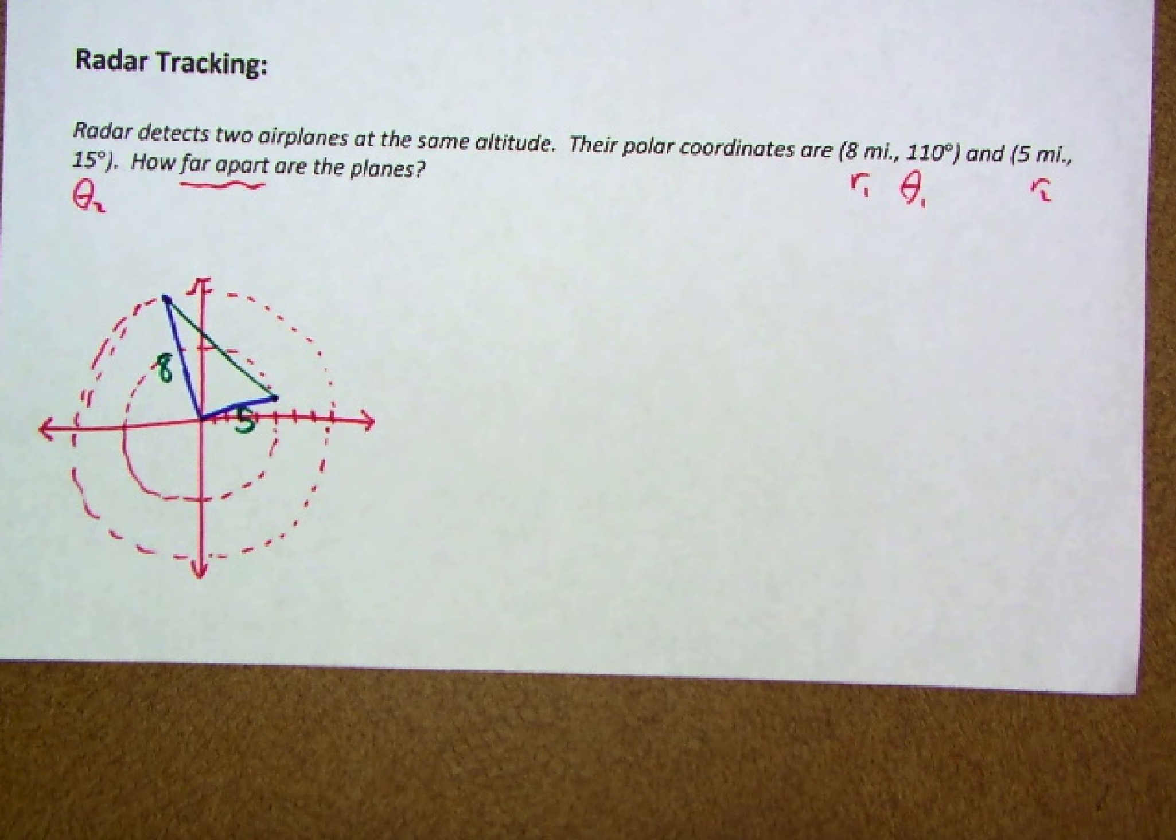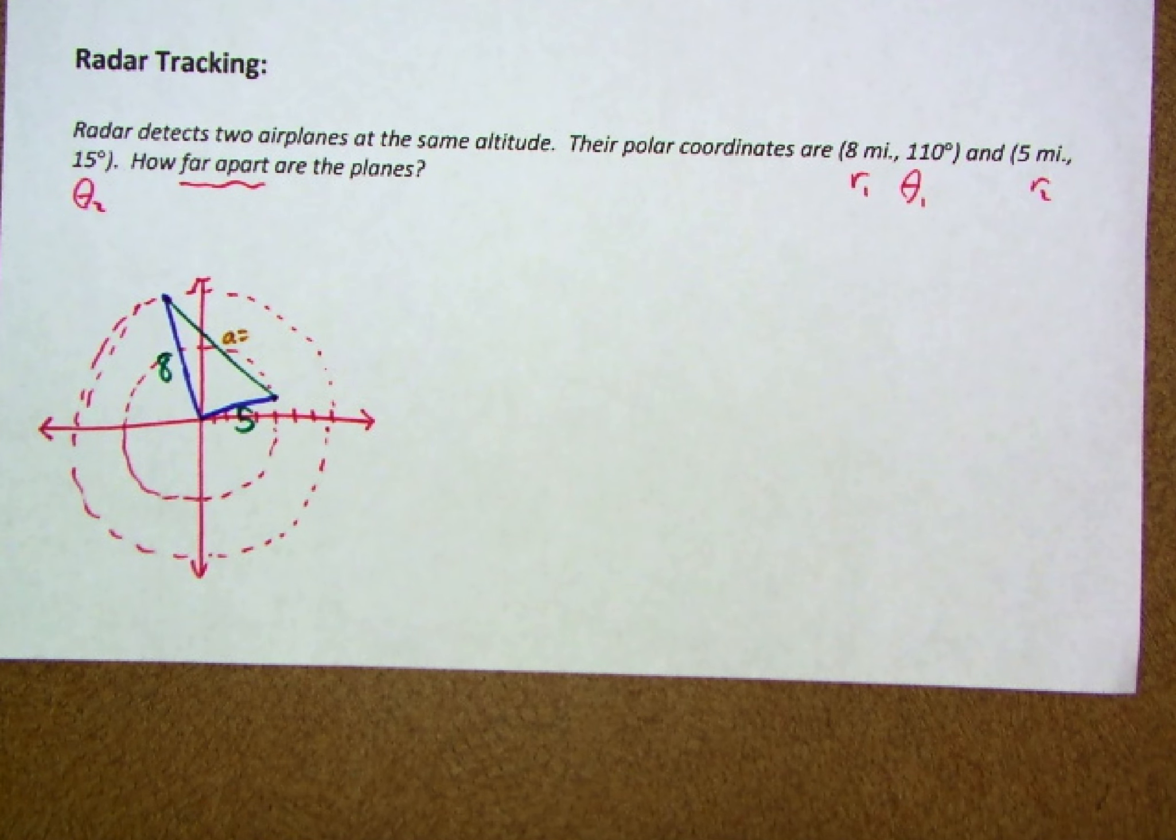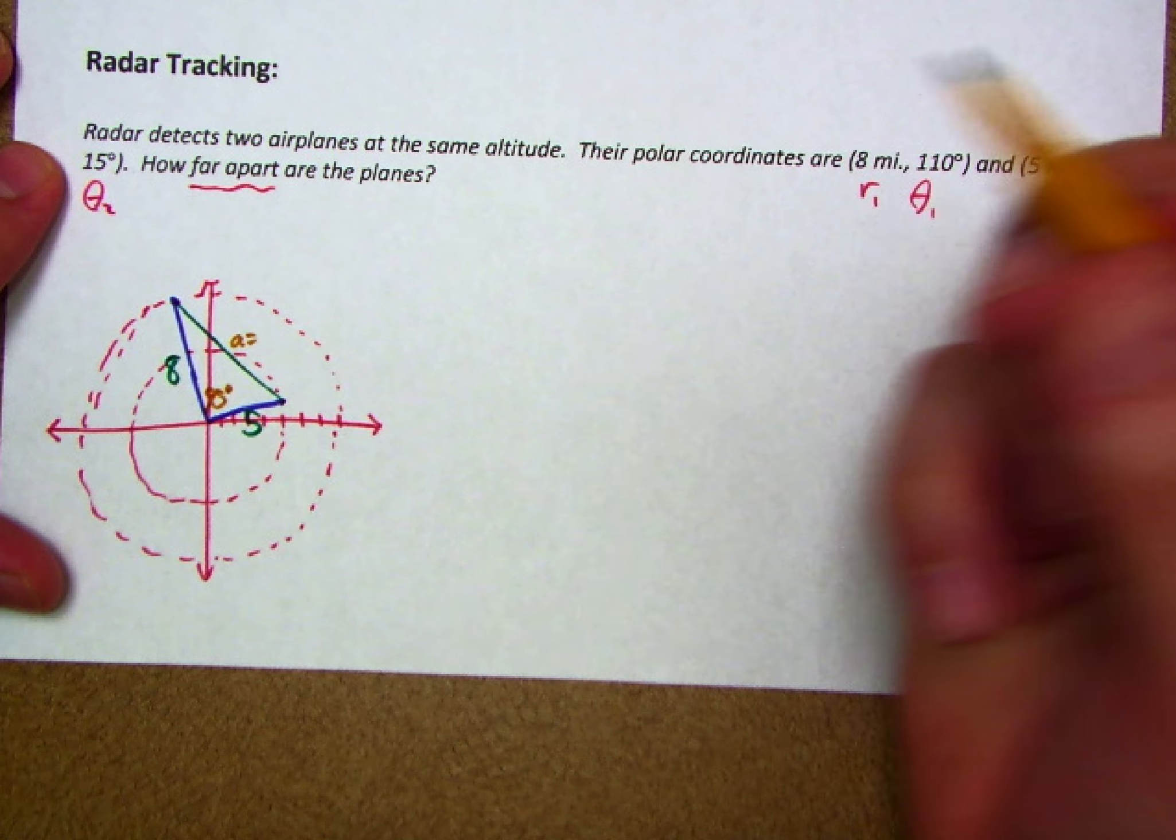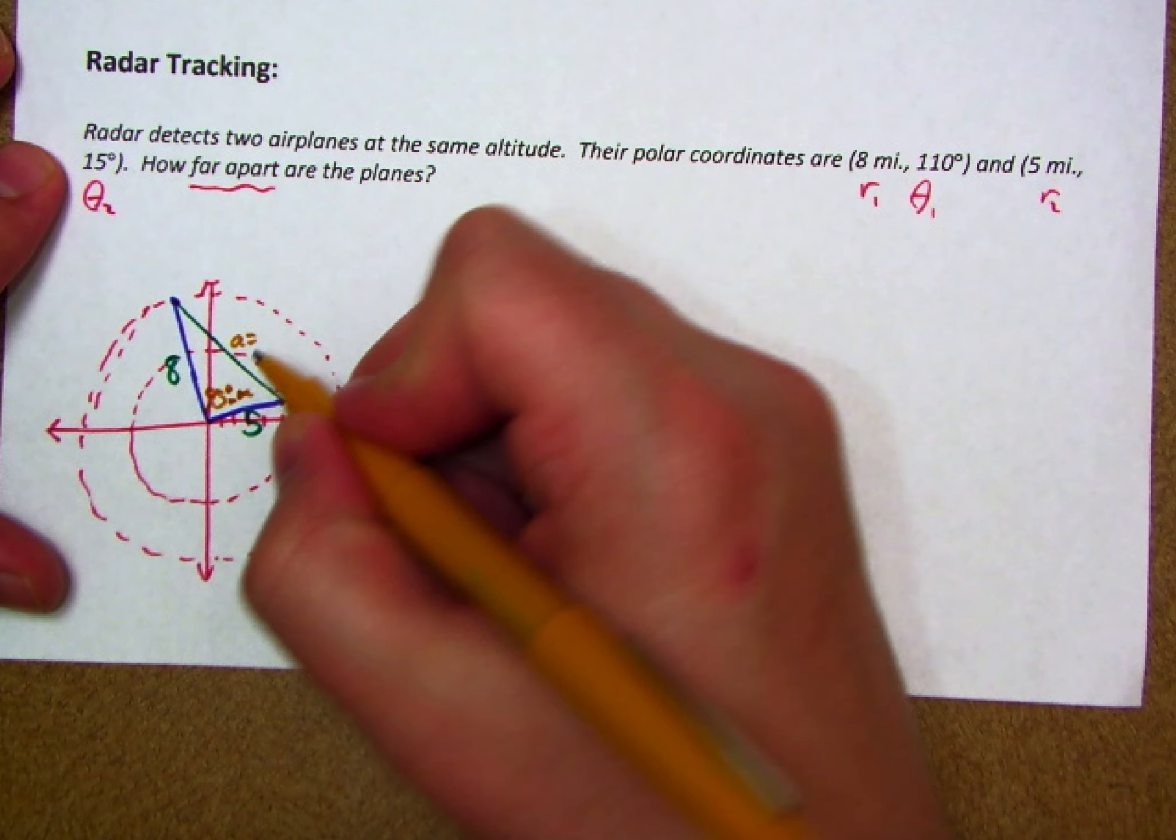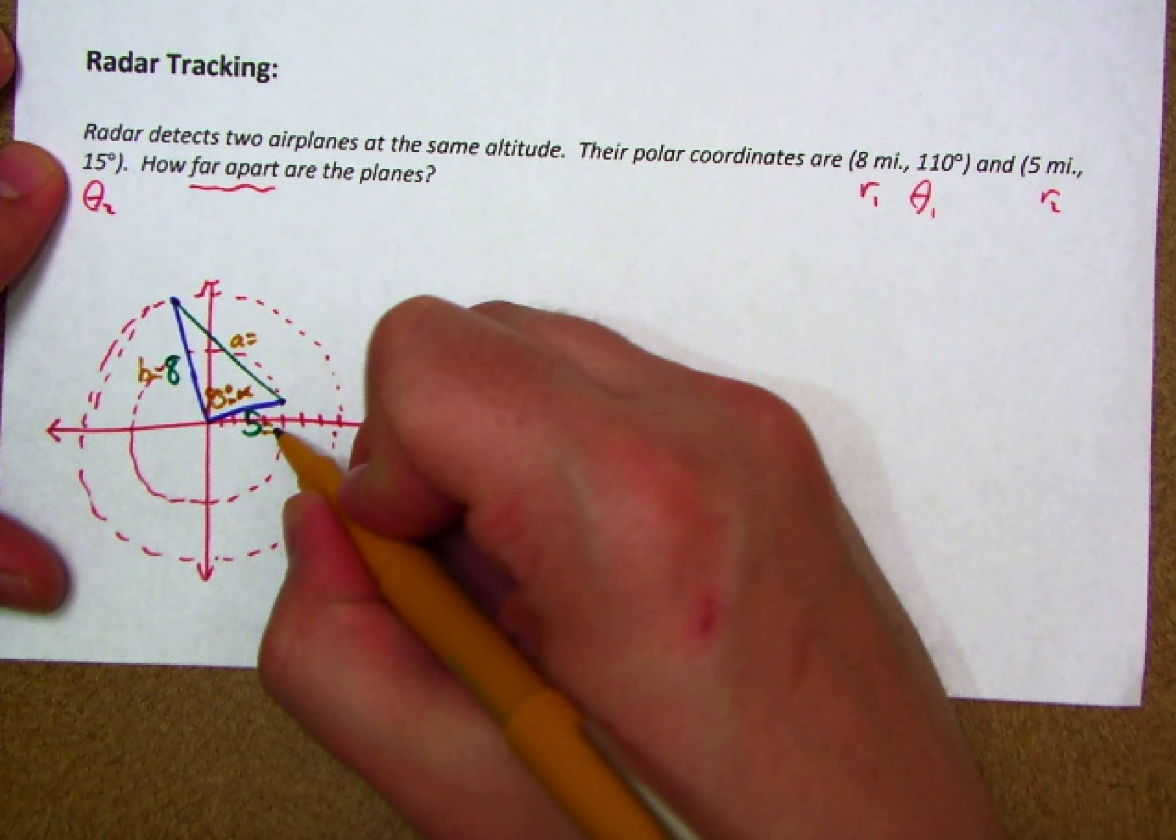Now likewise, because we're looking for that missing side length, I'll call that A. We're looking for what A would be. You may notice we could actually state what this angle is between these two sides, the 5 and the 8. Given that that's 110 and this is 15, we could say this is 95 degrees. So I'm going to call that one alpha. We'll call this one B, this one C, just using our typical setup for the law of sines and cosines.